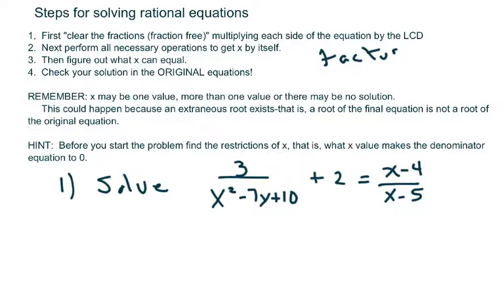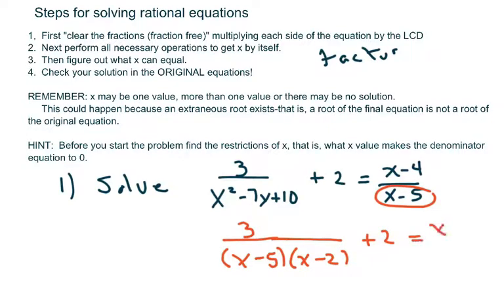So basically I'm going to take this equation and factor the denominator. And usually, if you can't factor very well, it's probably going to include the piece that's also within the equation. So it's probably going to be x minus 5, and so this would leave x minus 2 here. And that works, and then you have plus 2 equals x minus 4 over x minus 5.